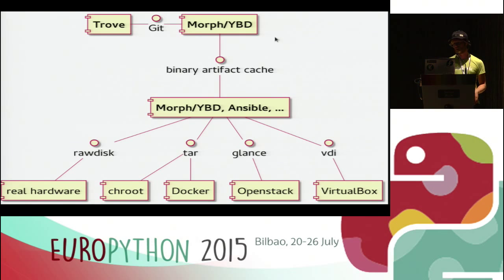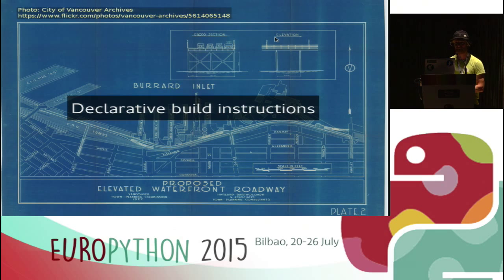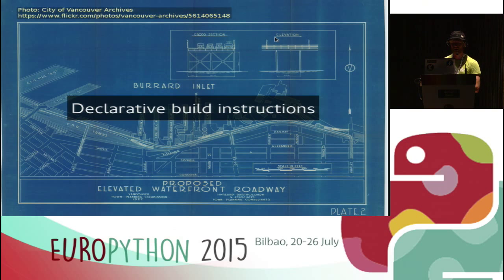The part that interests me the most about BaseRock is the definitions language, which we refer to as declarative build instructions or declarative definitions. The idea is to turn build instructions into data. At the moment they're code. There are lots of build instructions in the world - Debian has build instructions for tens of thousands of packages - but it's all code, and it's really hard to reason about unless you understand all seven build systems Debian has developed over the years.